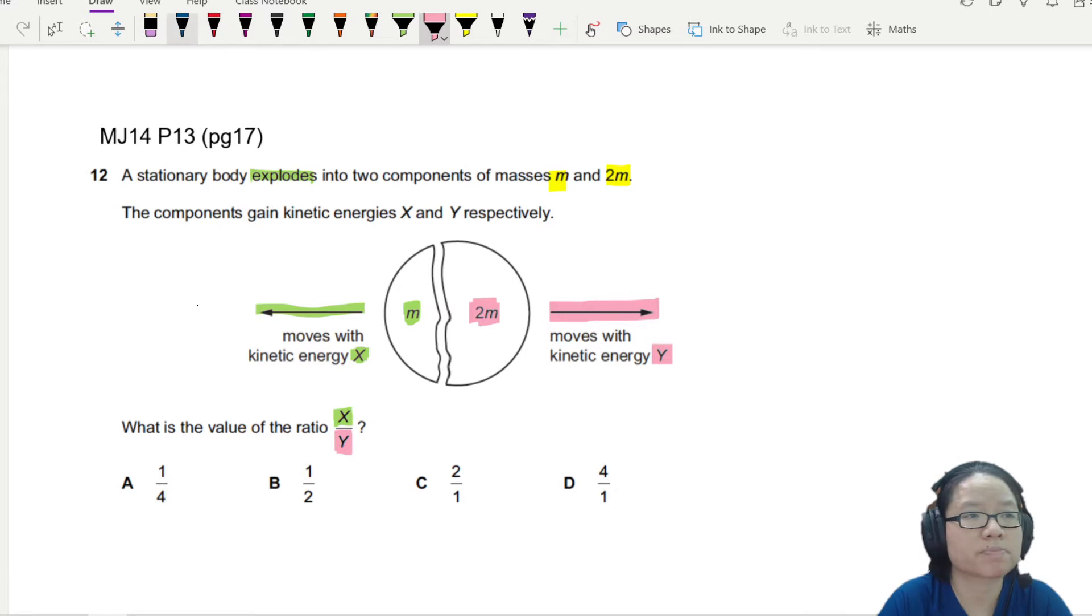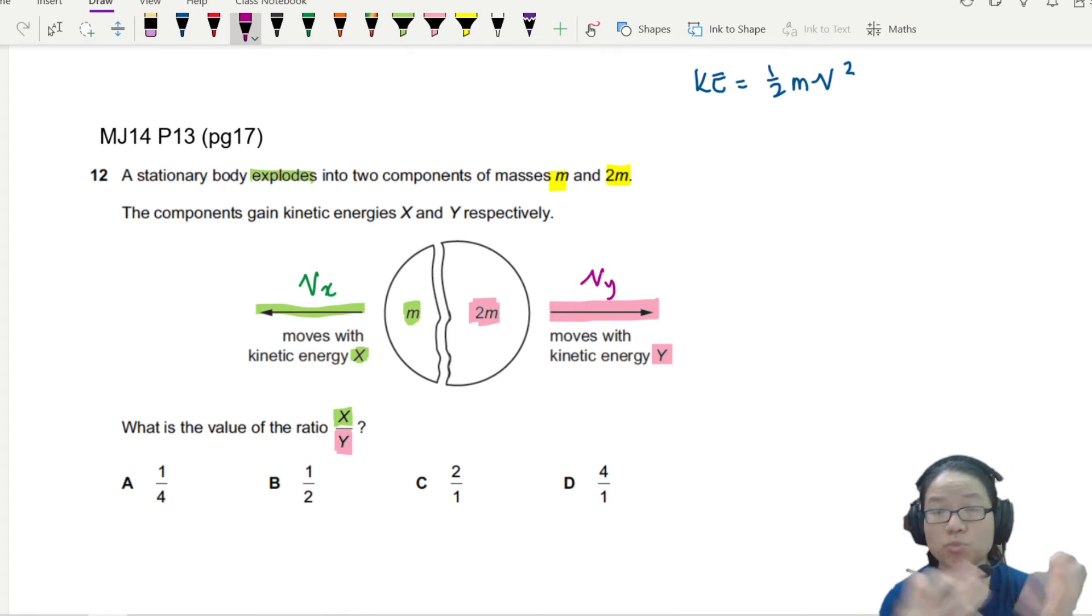So let's think a bit first. Kinetic energy can be calculated using the equation half m v squared. So I have information about the mass. The left piece is m and the right piece is 2m. But I don't really know anything about the velocity. But maybe I need to find it. So let's say this is Vx and this one is Vy. So how do we find the velocity of a moving object?